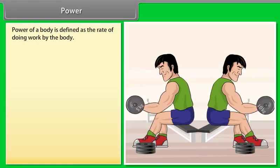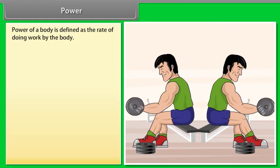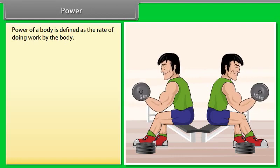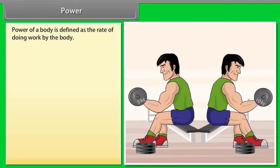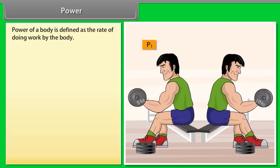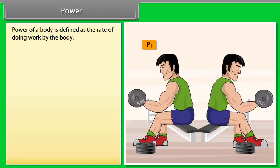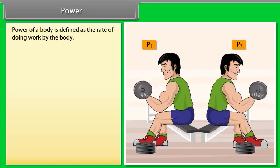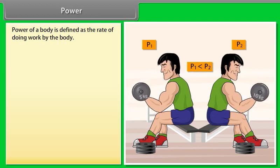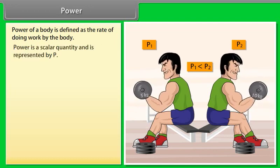Power of a body is defined as the rate of doing work by the body. Let us take an example: A boy doing exercise by using dumbbell. When he used the dumbbell of 5 kg, then he applied power P1, and when he used the dumbbell of 10 kg, then he applied power P2. Hence the power rating is high when he used the dumbbell of 10 kg as compared to the dumbbell of 5 kg.